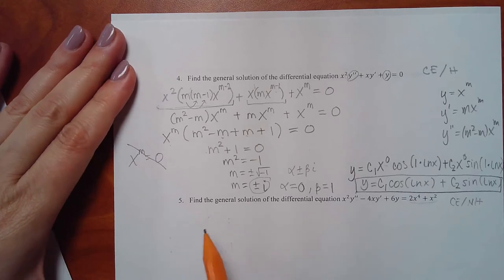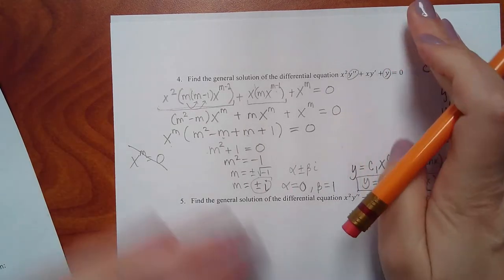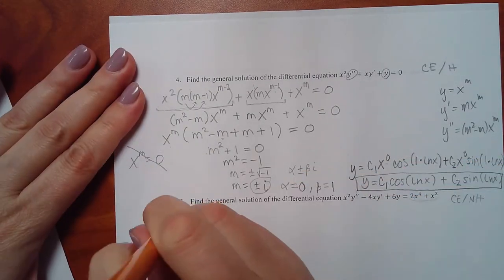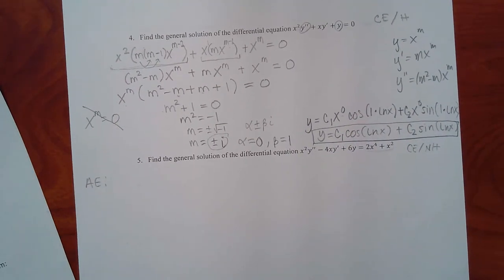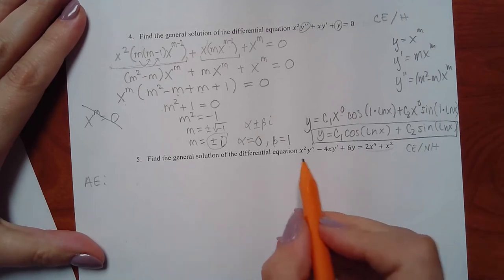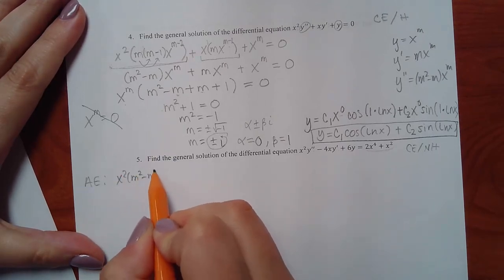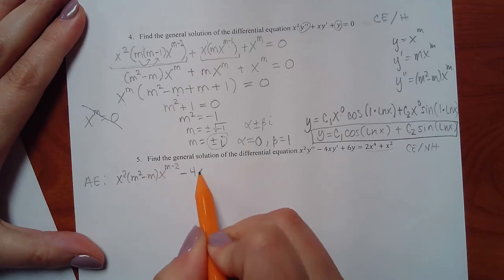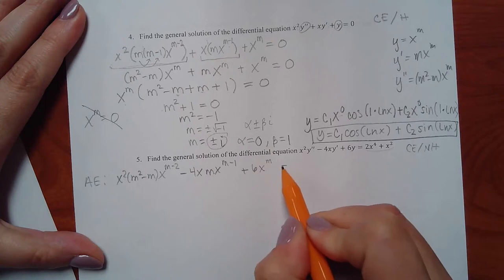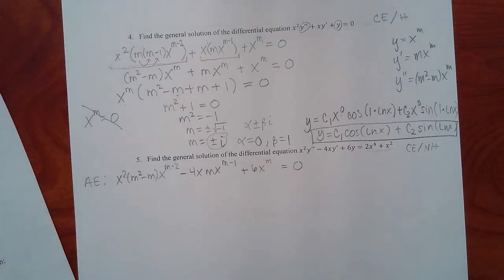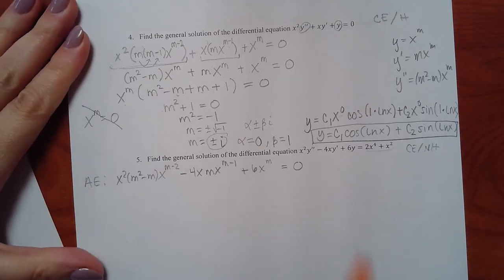Setting up the auxiliary equation from memory using y = x to the m: x squared times m(m-1)·x to the m minus 2, minus 4x times m·x to the m minus 1, plus 6 times x to the m. We're treating it as homogeneous to find yc. Factoring out x to the m gives m squared minus m minus 4m plus 6 equal to zero.